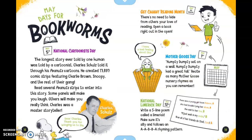May Days for Bookworms. May 5th is National Cartoonist Day. The longest story ever told by one human was told by a cartoonist — Charles Schulz told it through his Peanuts cartoons. He created 17,897 comic strips featuring Charlie Brown, Snoopy, and the rest of their gang. Read several Peanuts strips to enter into this story. Some panels will make you laugh, others will make you really think. Charles was a master storyteller.